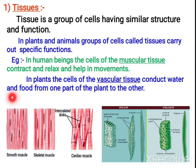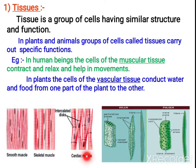What is the main function of muscular tissue? They are helpful in contraction and relaxation, and they are helpful in your movements. For example, you are walking from one place to another, or you are doing some work — you do it with the help of your muscular tissue only. Your heart contracts and relaxes by means of cardiac muscle.